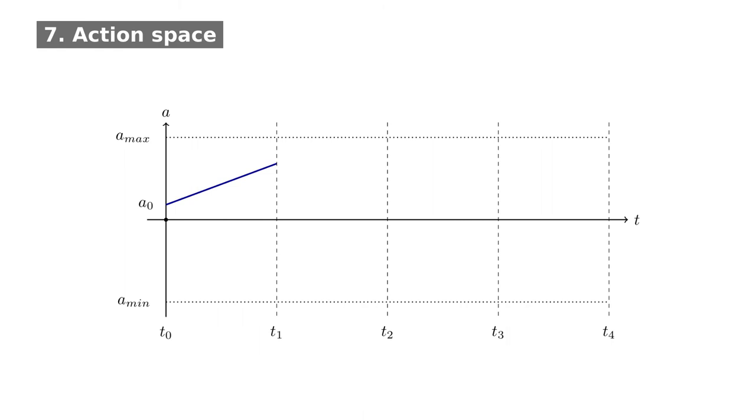These goals can be achieved by predicting joint accelerations. So every time the network is invoked, it outputs a target acceleration, which should be reached at the beginning of the next decision step. Between decision steps, the acceleration is linearly interpolated, which makes the final trajectory a cubic spline.